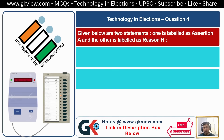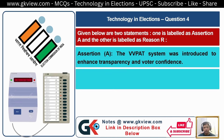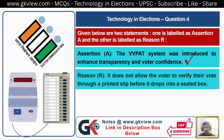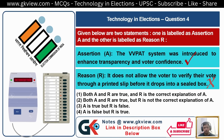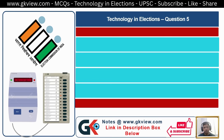Question Number 4. Given below are two statements — one labelled as Assertion A and the other as Reason R. Assertion A: The VVPAT system was introduced to enhance transparency and voter confidence — this is a correct statement. Reason R: It does not allow the voter to verify their vote through a printed slip before it drops into a sealed box. The reason is wrong because it does allow the voter to verify. So the right option is 3: A is true but R is false.